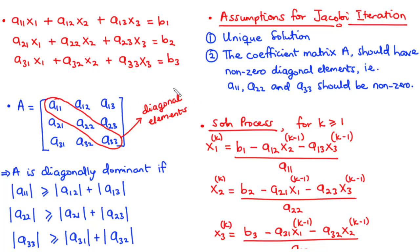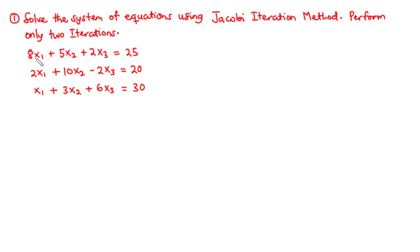We have a problem to solve together so we can clearly understand how this iteration method works. In the first problem, we solve the system of linear equations using Jacobi's iteration method and are asked to perform only two iterations. Since no initial guess is given, we assume x1(0) = x2(0) = x3(0) = 0.